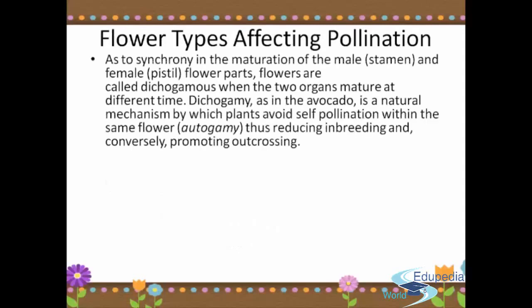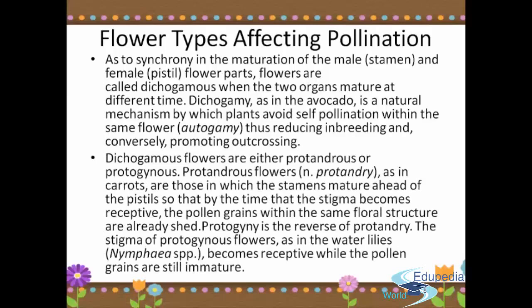Flower types also affect pollination. As to synchrony in the maturation of the male stamen and female pistil, flowers are called dichogamous when the two organs mature at different times. Dichogamy, as in the avocado, is a natural mechanism by which plants avoid self-pollination within the same flower (autogamy), thus reducing inbreeding and promoting out-crossing. Dichogamous flowers are either protandrous or protogynous. Protandrous flowers, as in carrot, are those in which the stamens mature ahead of the pistils, so that by the time the stigma becomes receptive, the pollen grains within that same floral structure have already been shed. Protogyny is the reverse of protandry. The stigma of protogynous flowers, as in water lilies, becomes receptive while the pollen grains are still immature.